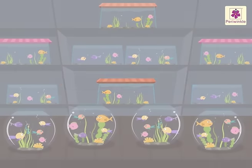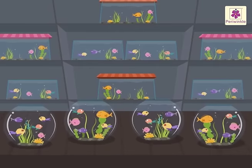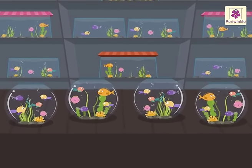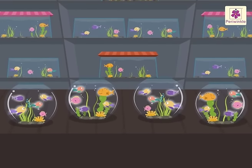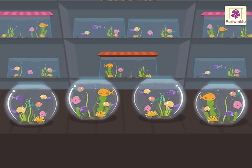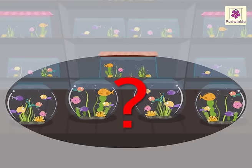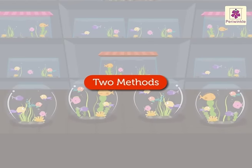Let us understand the multiplication concept with the help of these little fish. There are five fish in each bowl. There are four fish bowls. How many fish are there in all? There are two methods to find the number of fish in all.